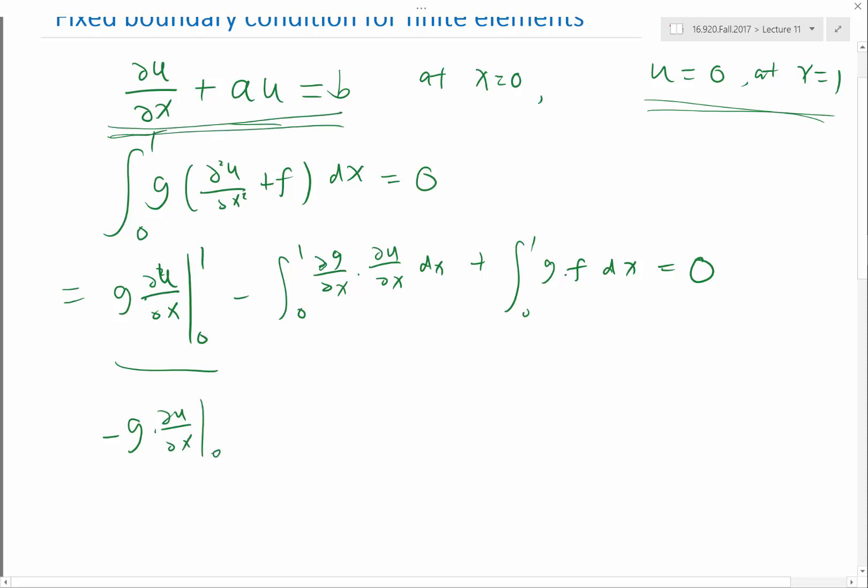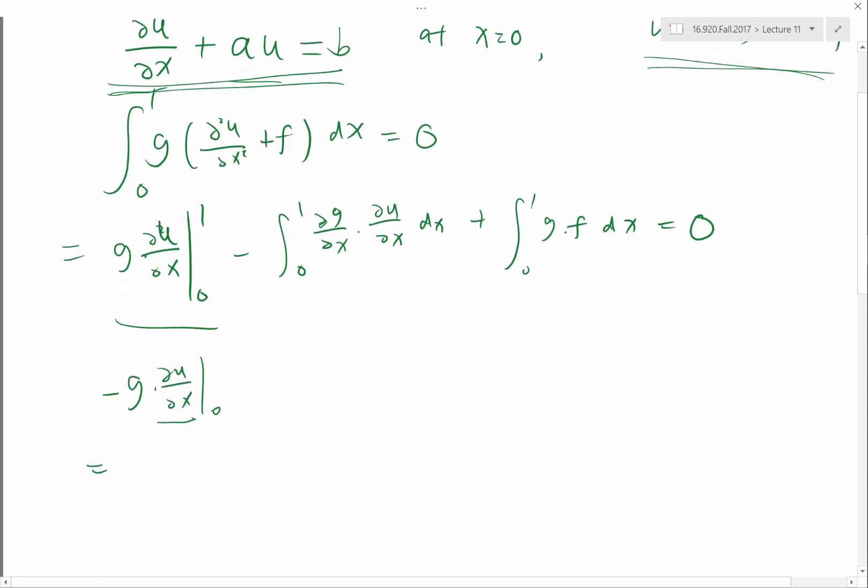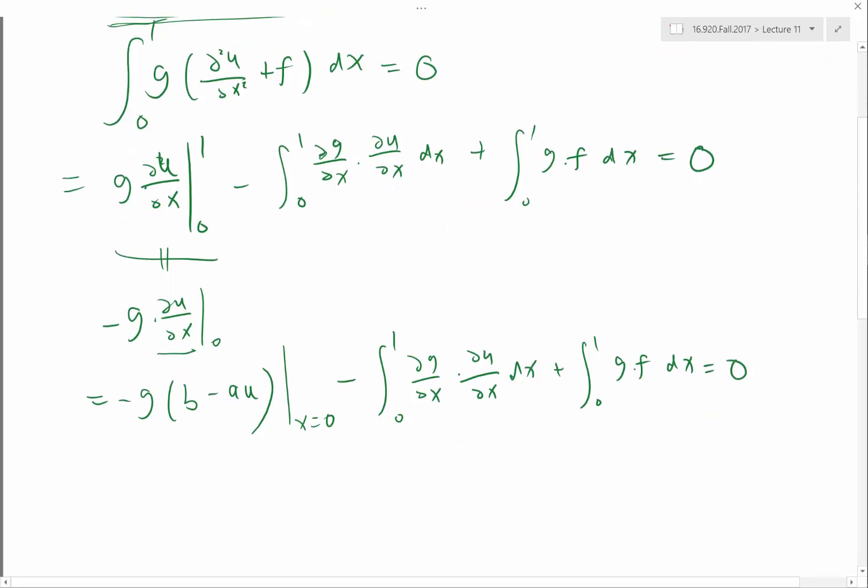Now from this boundary condition, du/dx is actually equal to b minus au, right? b minus au at x equal to 0. So let's add all of this together. Minus this. So now this is my weak form. This equal to 0 is my new weak form.